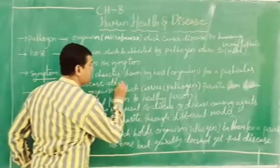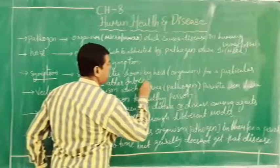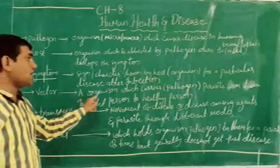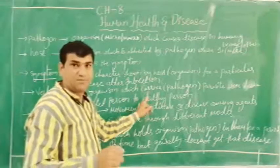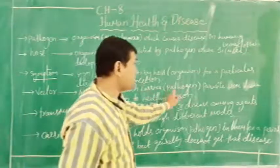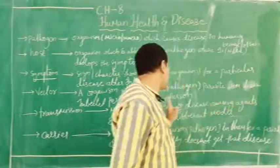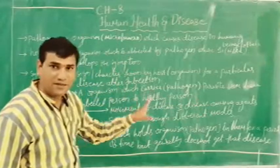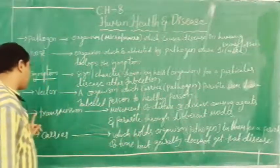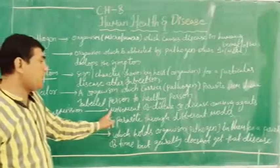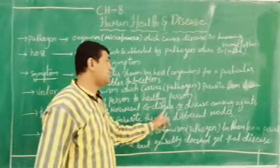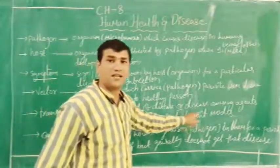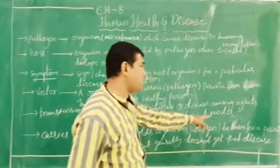Vector is an organism which carries the pathogen — as a parasite — from a diseased or infected person to a healthy person through different ways. Transmission: movement or passing of disease or disease-causing agents and parasites through different modes.